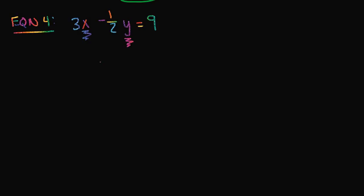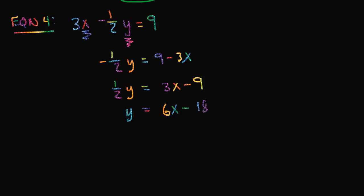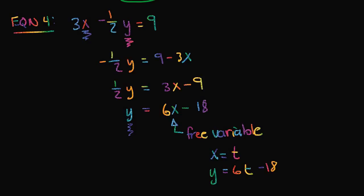Subtracting 3x from both sides gives negative one-half y equals 9 minus 3x. Multiplying by negative 1 gives positive one-half y equals 3x minus 9. Multiplying by 2 gives y equals 6x minus 18. Here x is our free variable — it can be any real number and we always get a corresponding value for y. Letting x equal t, we get y equals 6t minus 18. This is the parametric representation of the solution set.